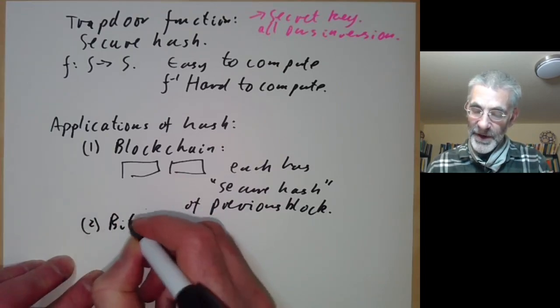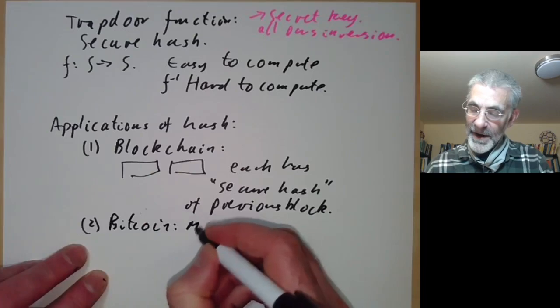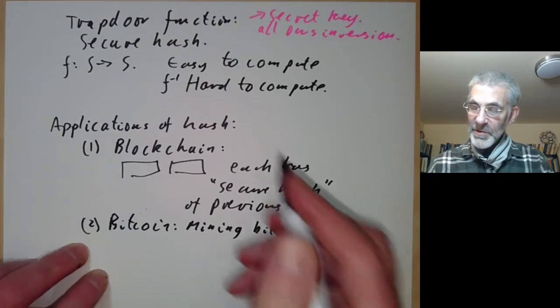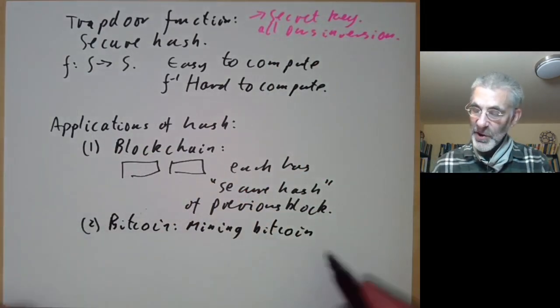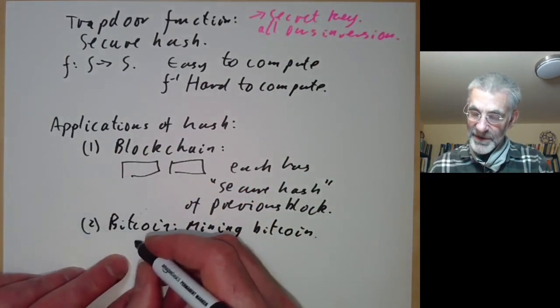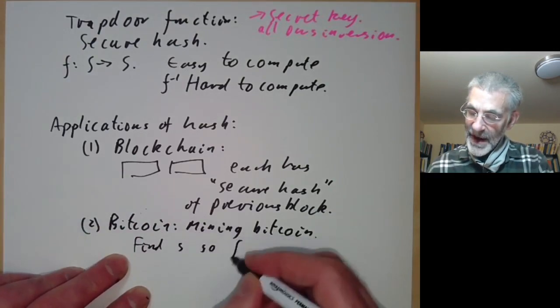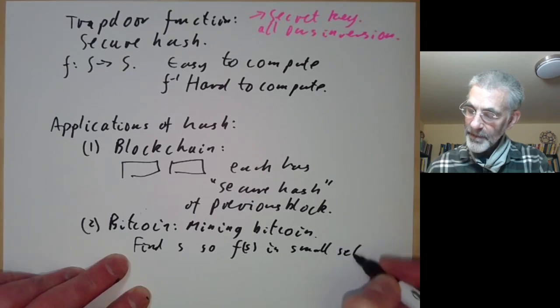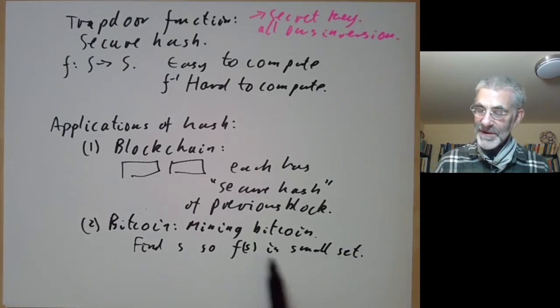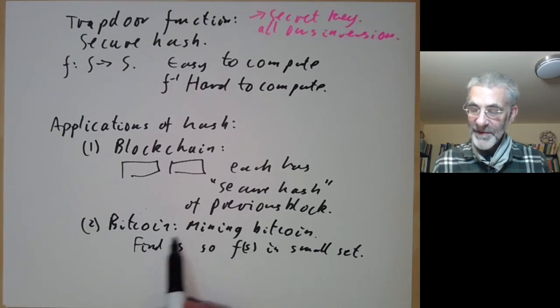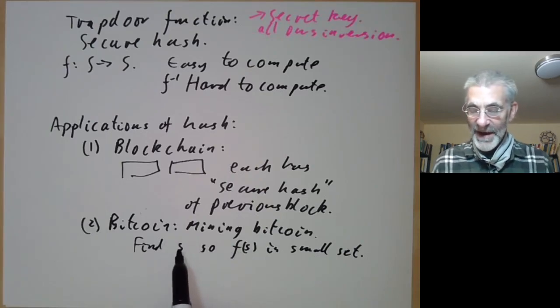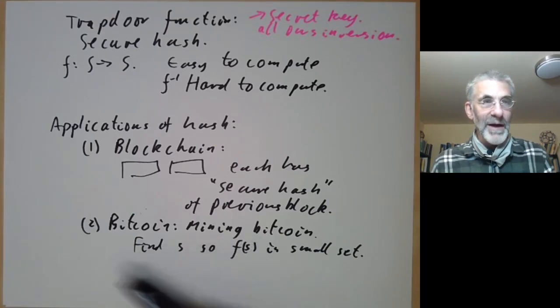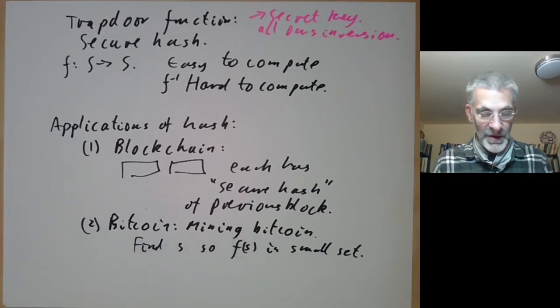Another application is in bitcoin. Mining a bitcoin is sort of related to inverting a secure hash function—we want to find S so that f of S is in some small set. This is very difficult to do and takes a lot of computation. You just have to keep on searching for all S until you find something with f of S in that small set. That's roughly what bitcoin mining is.